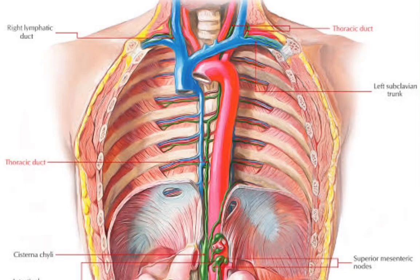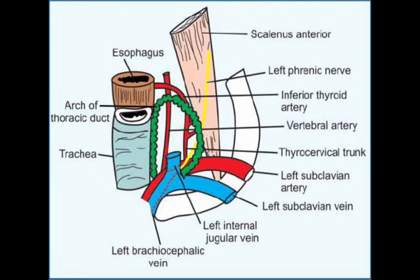In the superior mediastinum, the thoracic duct is related in front to the arch of the aorta and the left subclavian artery, behind to the bodies of the upper four thoracic vertebrae, to its right to the esophagus, and to its left to the left lung and pleura.